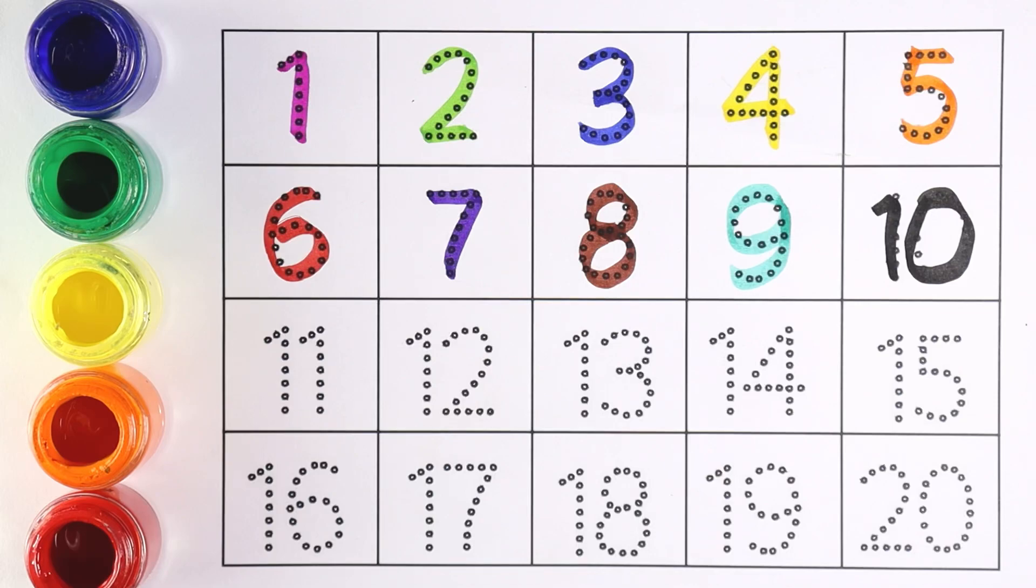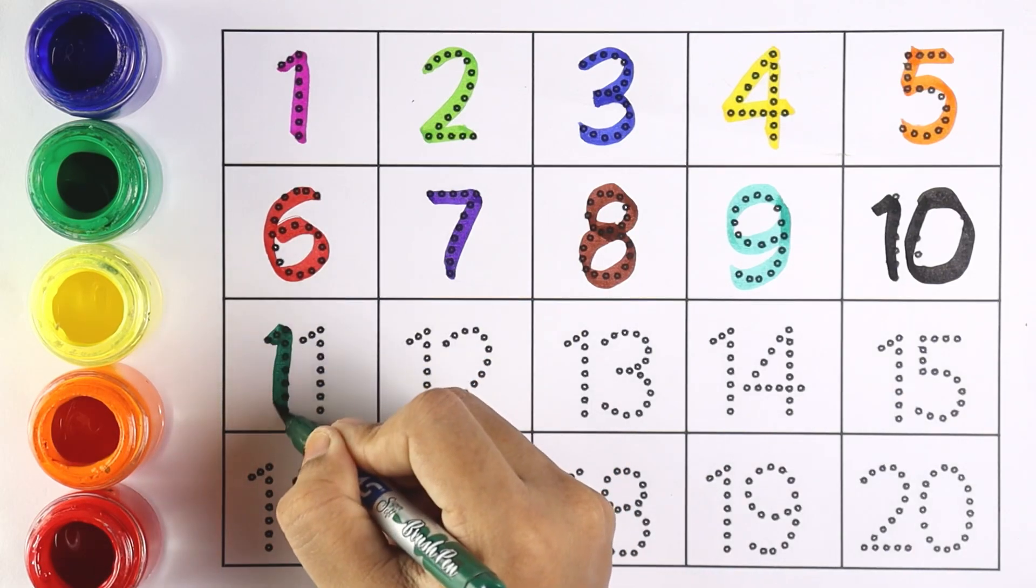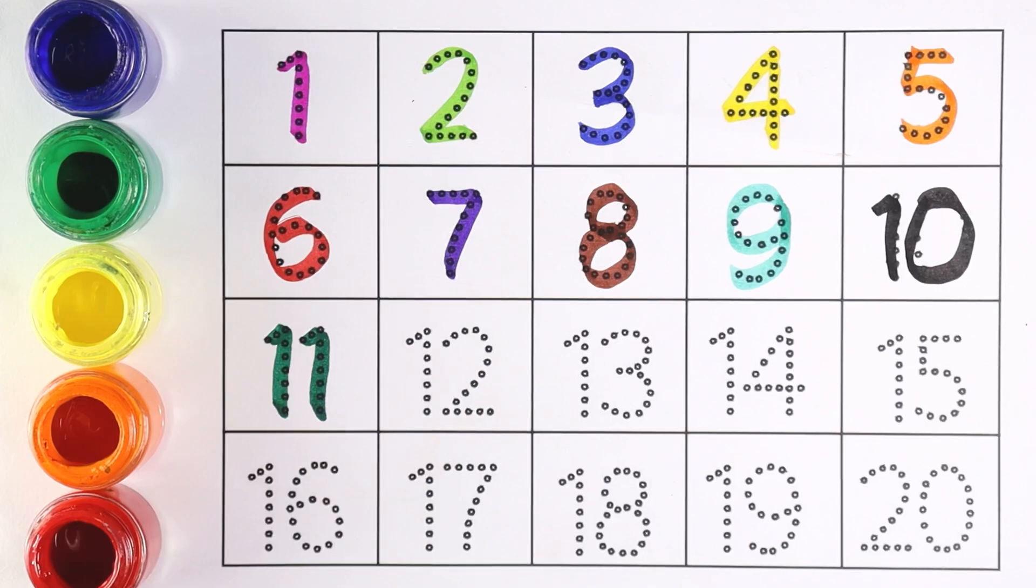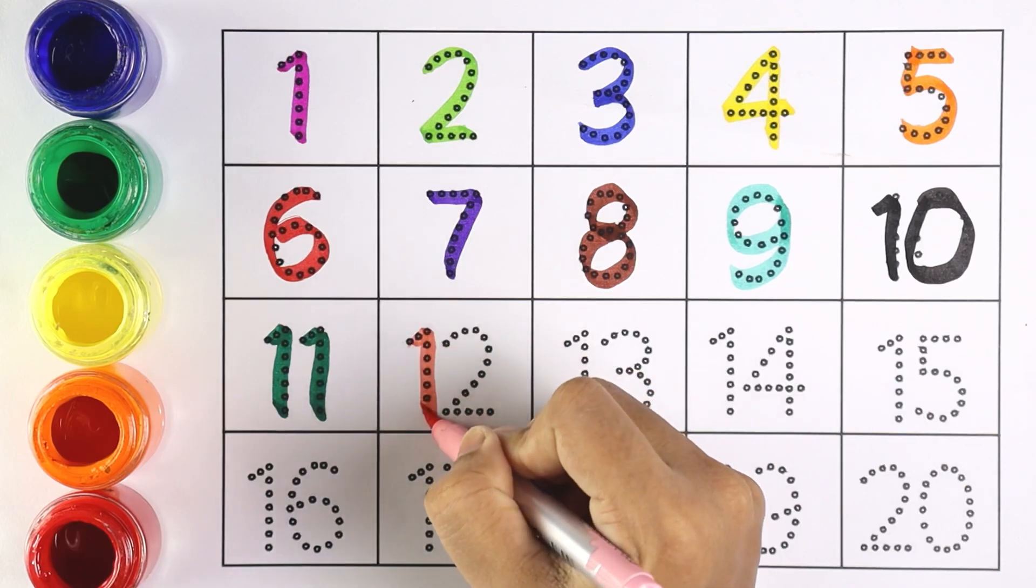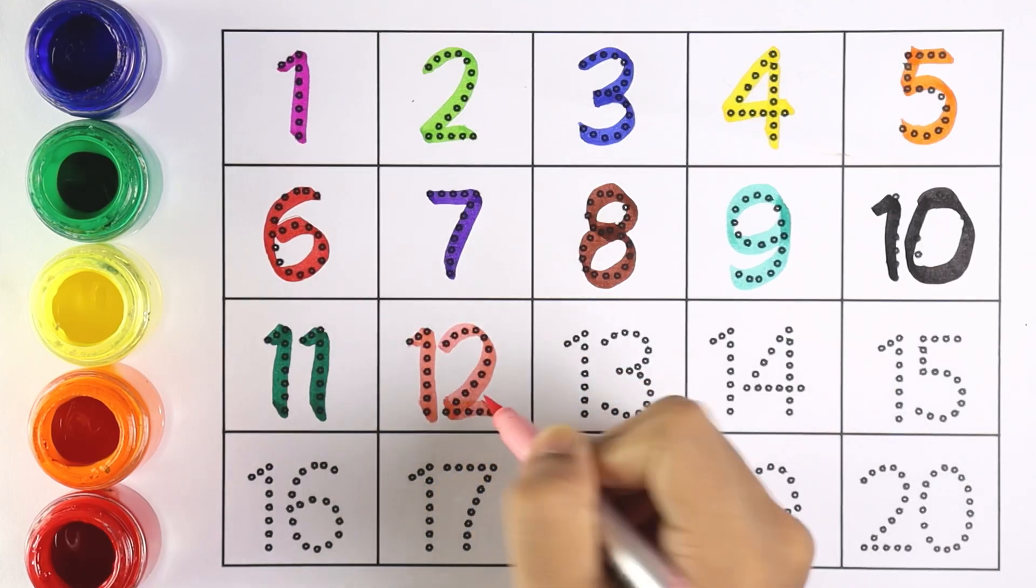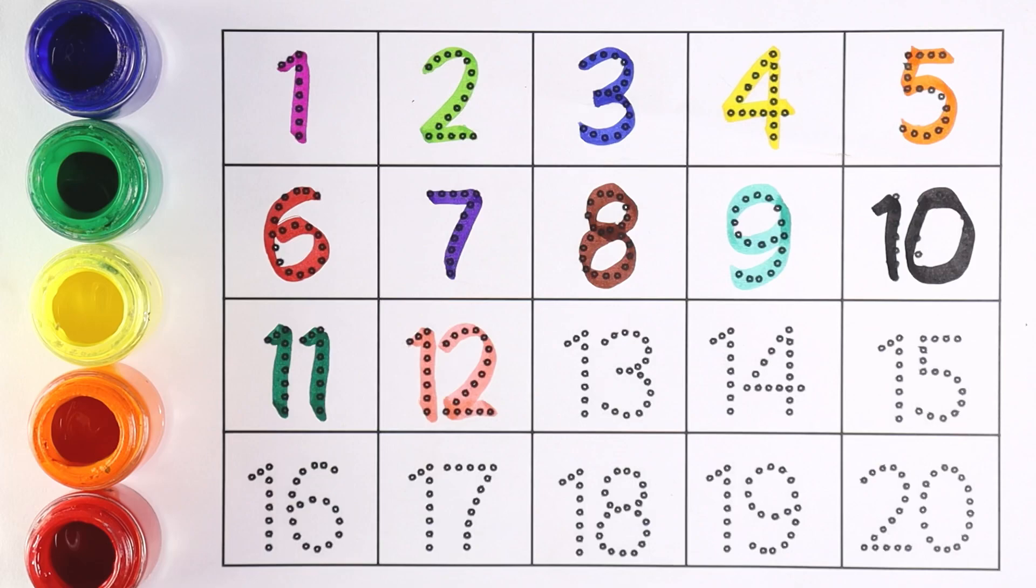Number 10. 1 and 1 makes the number 11. Number 11. Now I'm writing number 12. Number 12.